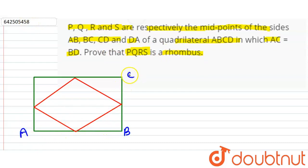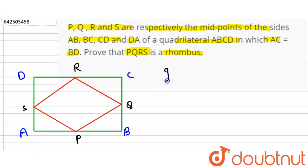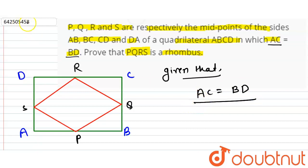Suppose this is A, this is B, this is C and this is D. ABCD is a quadrilateral, and P, Q, R and S are the midpoints of AB, BC, CD and AD respectively. We have to prove that PQRS is a rhombus. Given that AC equals BD. So first we join diagonals AC and BD.